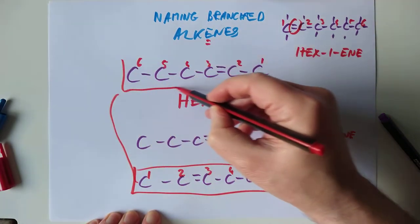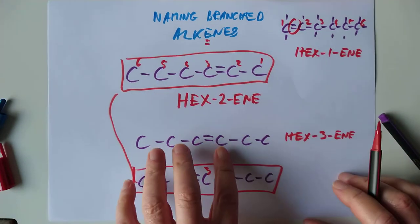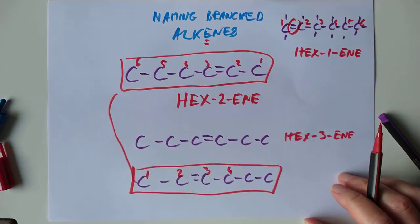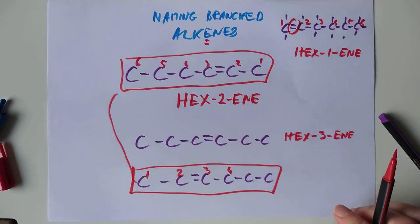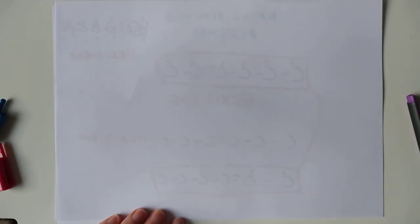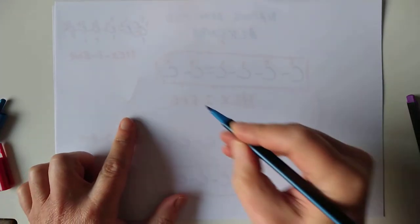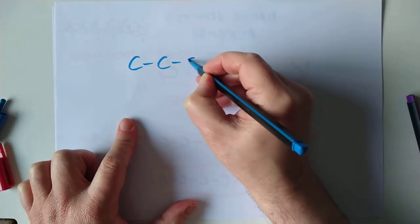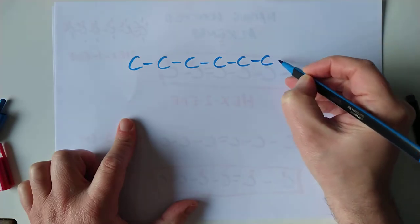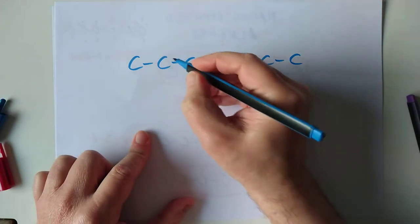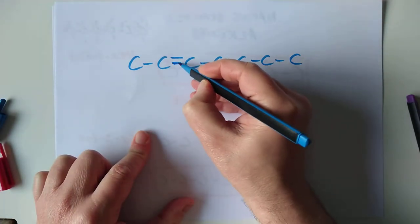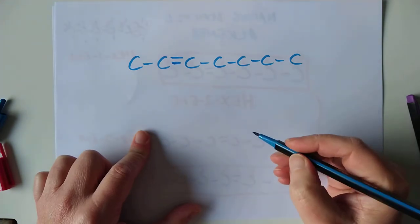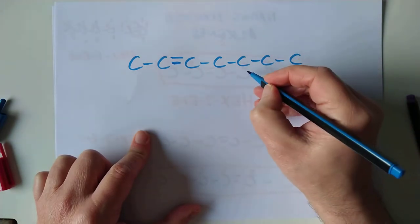That and that are the same molecule just flipped over by 180 degrees. Isn't that nasty? Right, now I started off this sheet as saying it was called naming branched alkenes. And I don't see a branch in sight yet. So let's move on to that. 1, 2, 3, 4, 5, 6, 7. Let's pop the double bond here randomly. And let's pop an ethyl group on here.